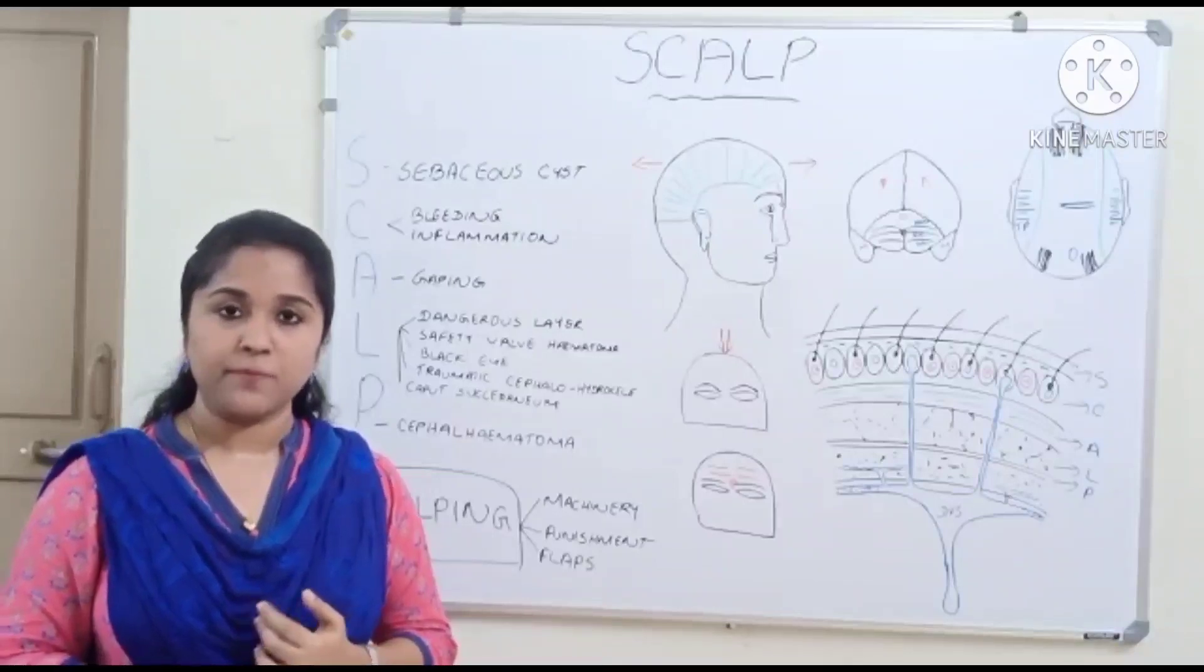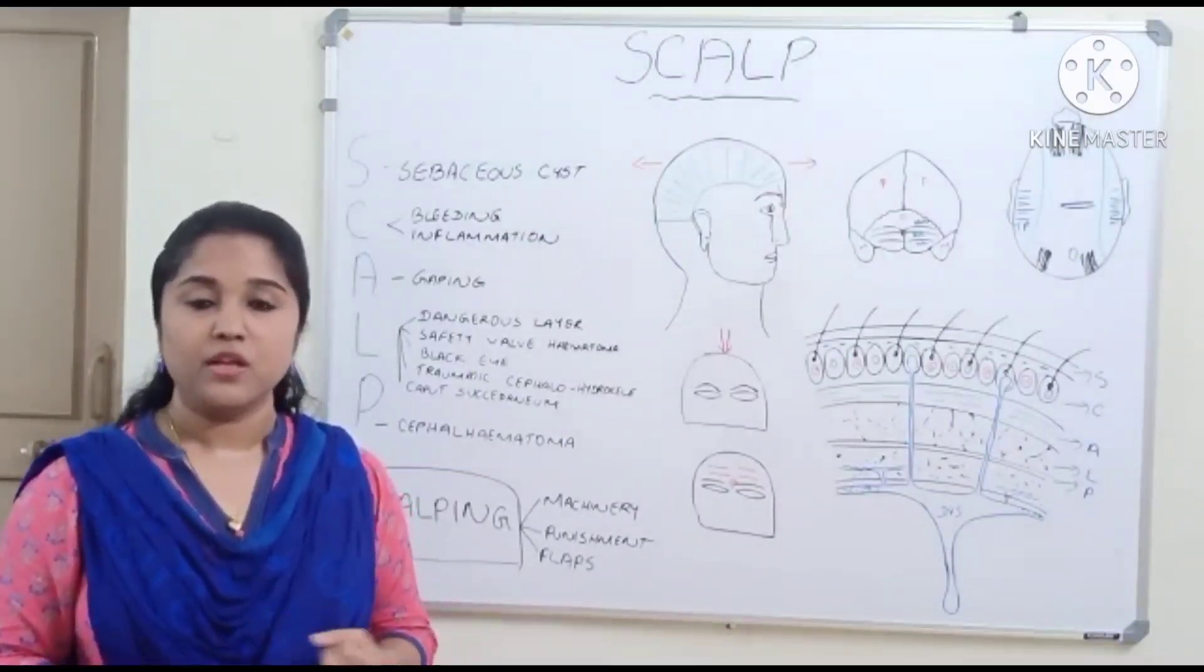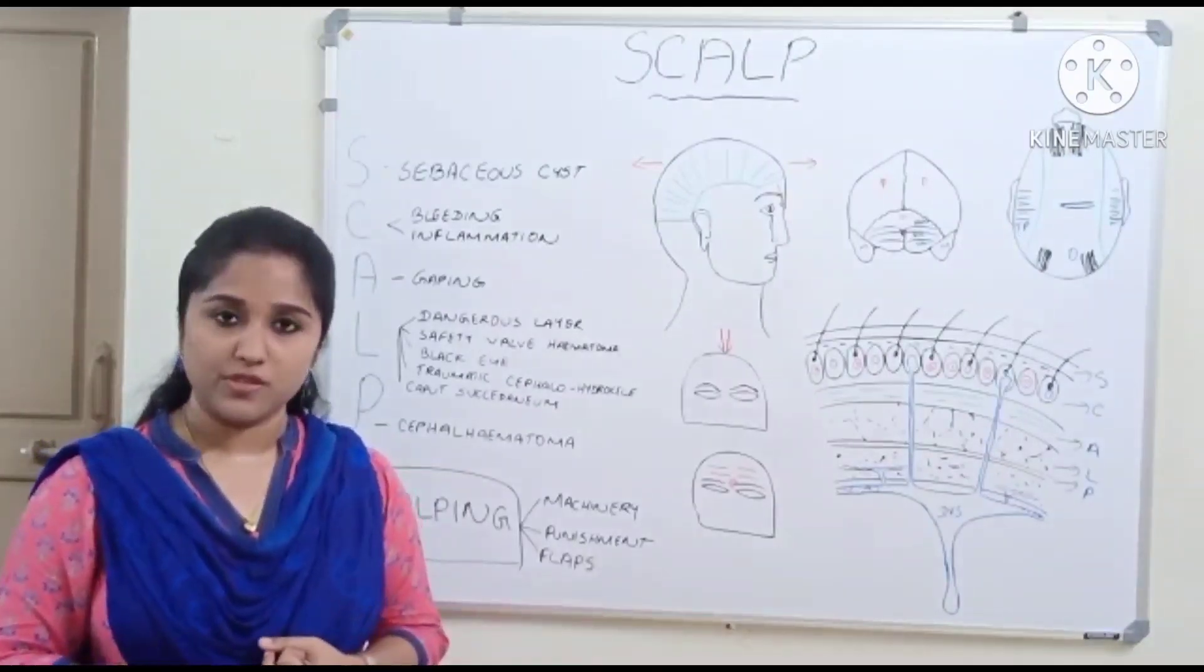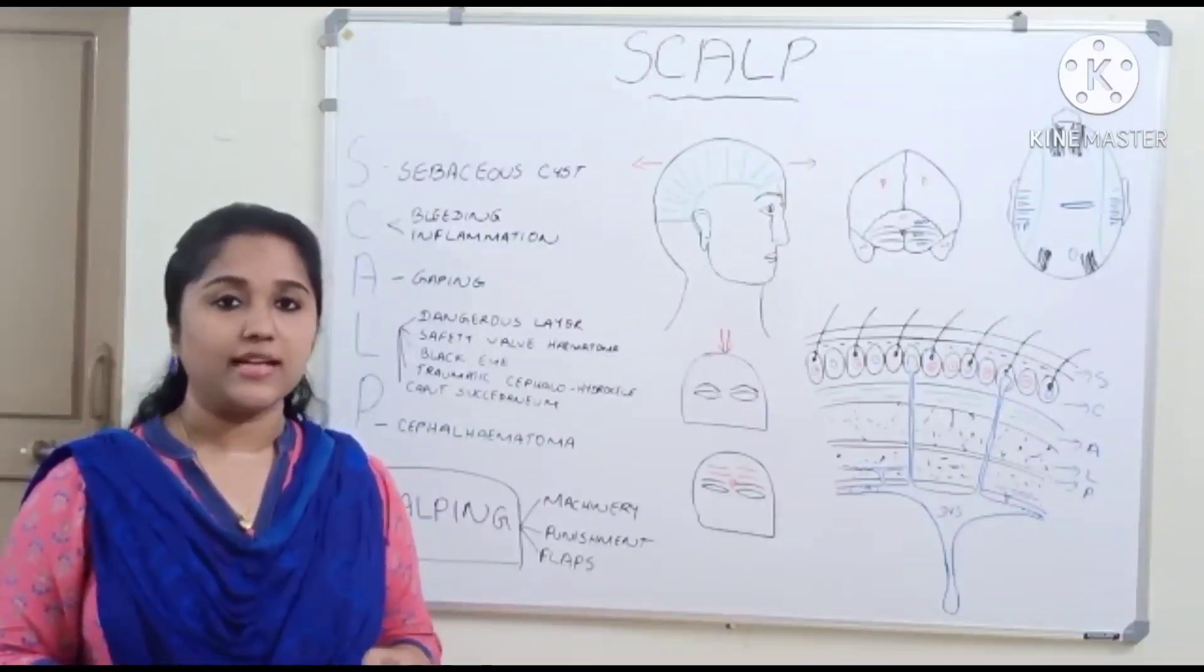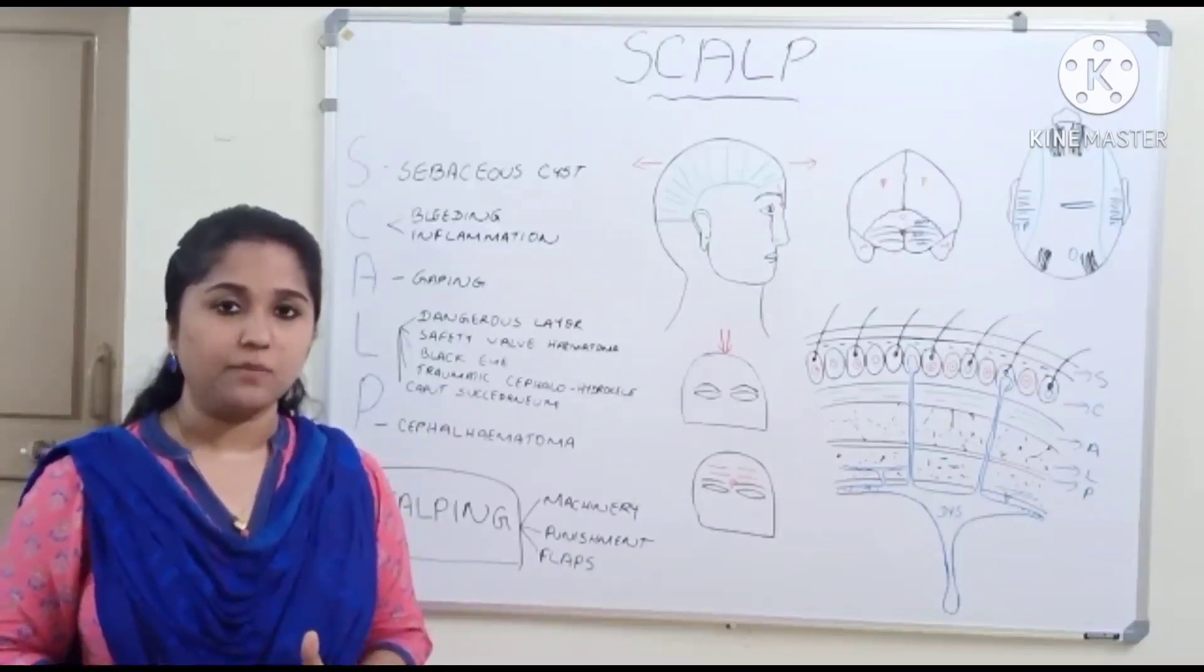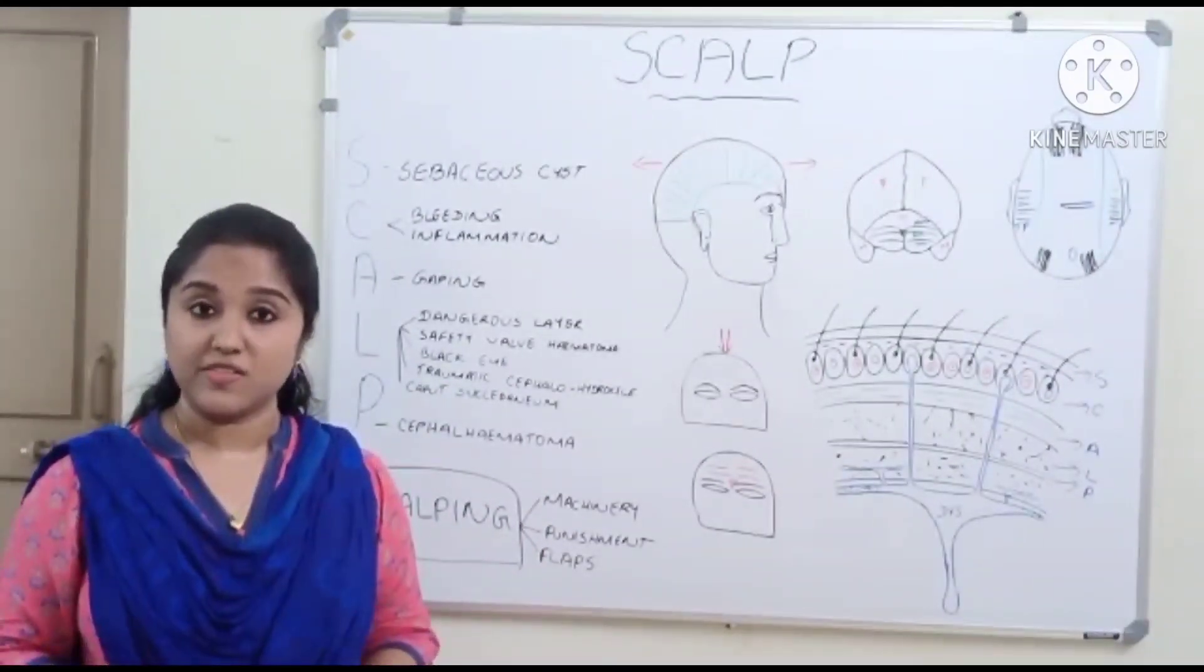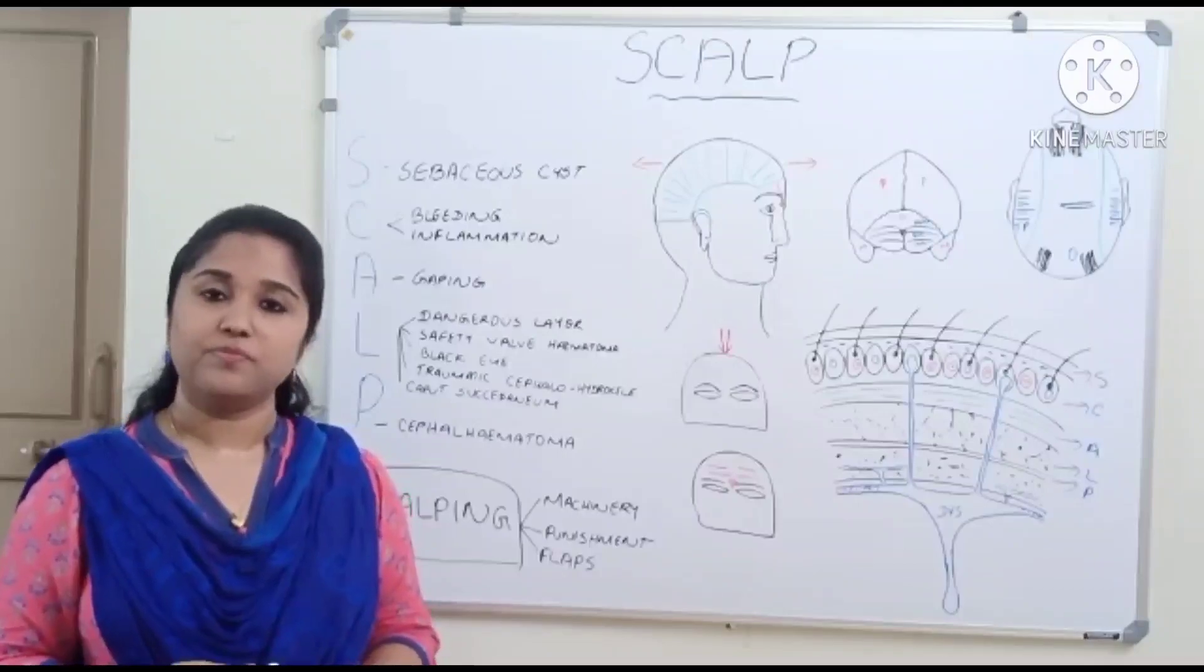These are the important layers and applied aspects. We dealt with the attachments, then the five layers: skin, close network of subcutaneous tissue, aponeurosis and epicranial muscle which includes occipitofrontalis and temporoparietalis, loose sub-aponeurotic tissue, and pericranium. In the next video, we will be discussing nerve supply, arterial supply, venous drainage, and lymphatic drainage. Thank you.